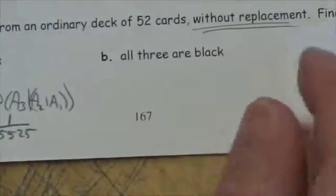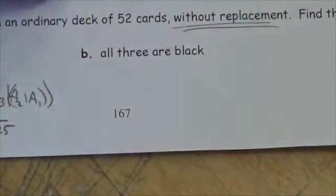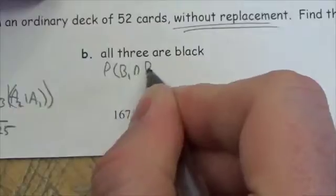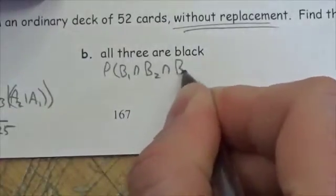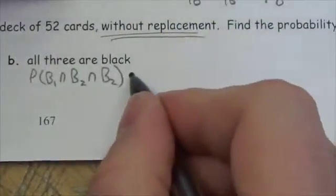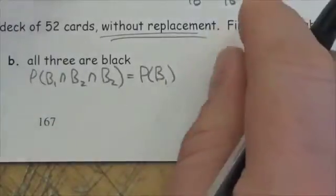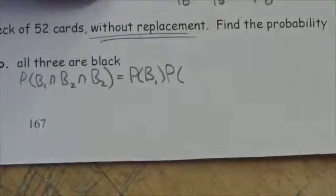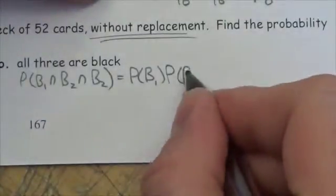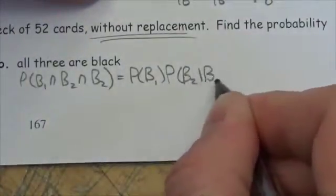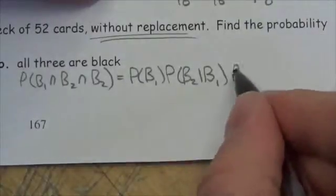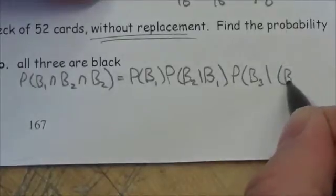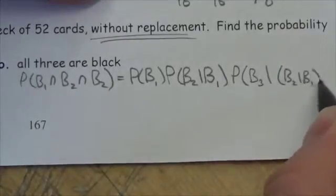Now let's take a look at the next one: all three are black. So this is going to be black on the first, black on the second, and black on the third. Because we're talking about dependent events here: probability of getting black on the second given the first was black, multiplied by the probability of getting black on the third given the second and first were both black.